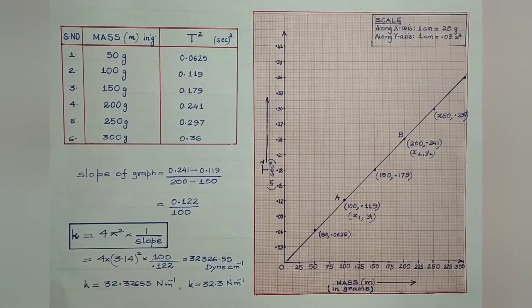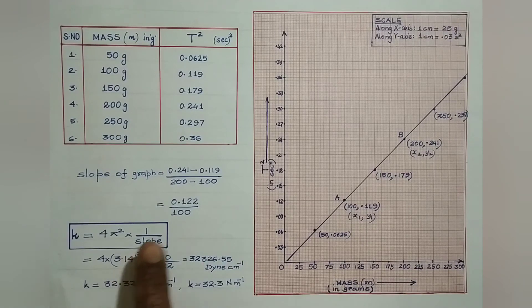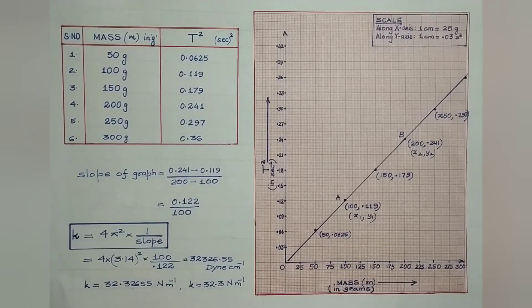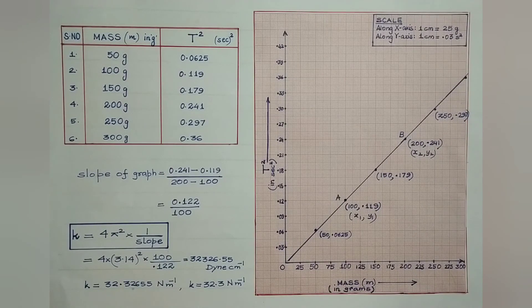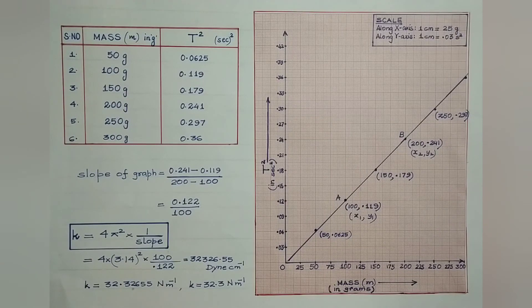I hope you have understood this experiment thoroughly. We have calculated the value of the spring constant k both mathematically using the working formula and graphically by plotting a graph between m and T squared. Thank you for watching — do subscribe to the channel to receive updates whenever a new video is uploaded.